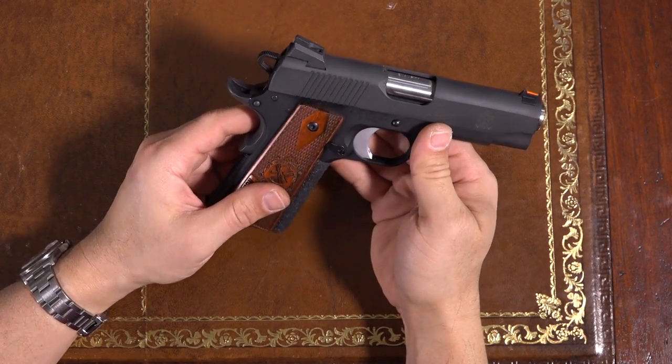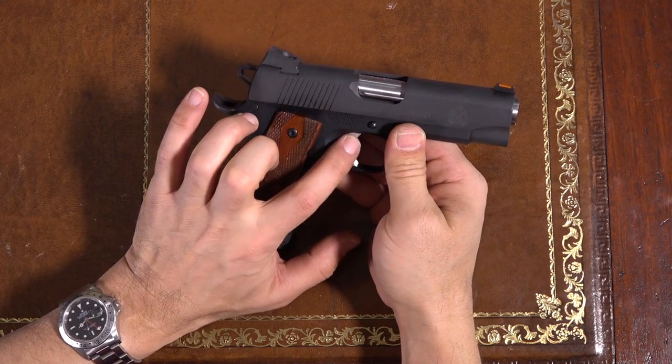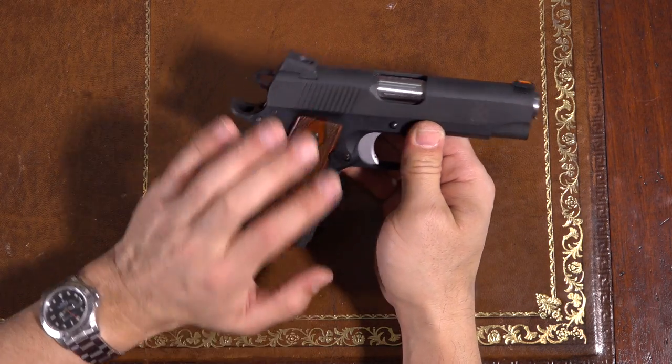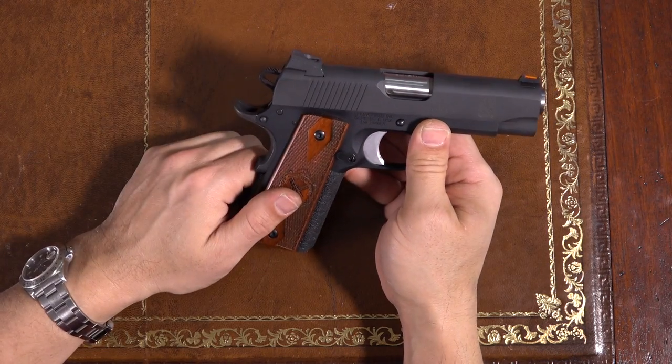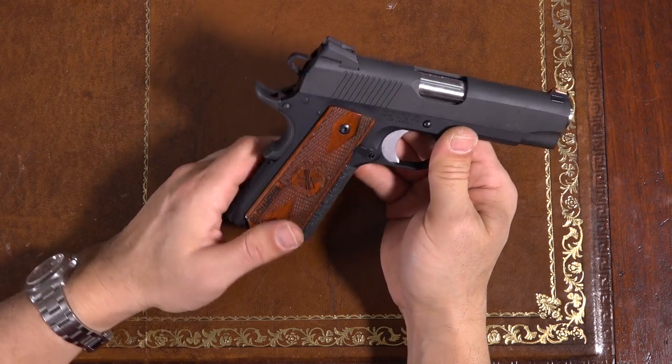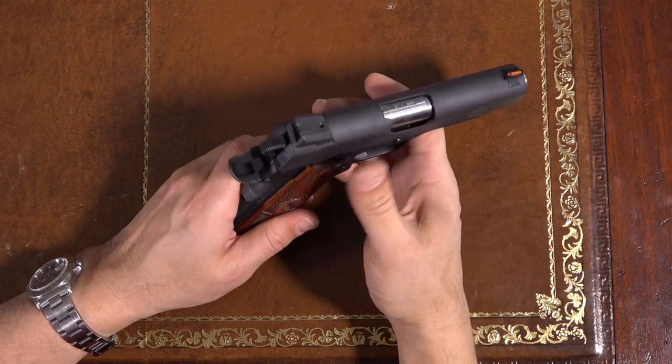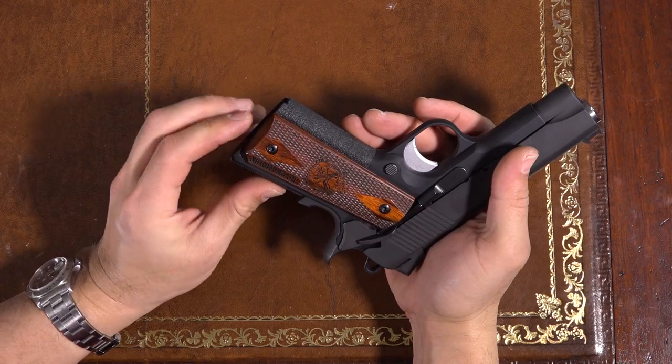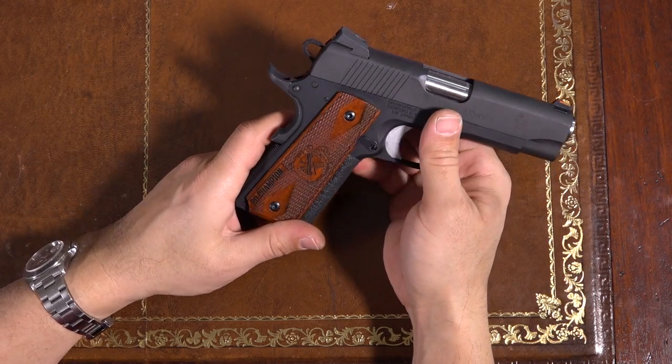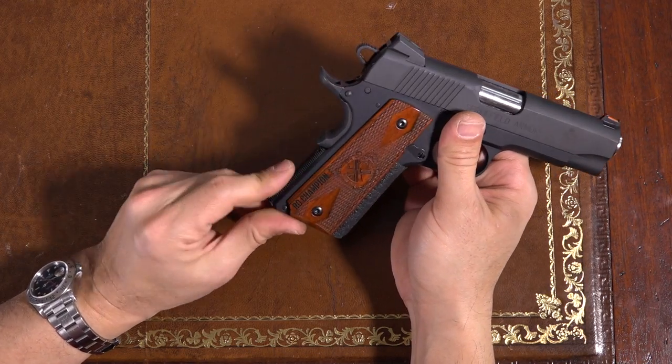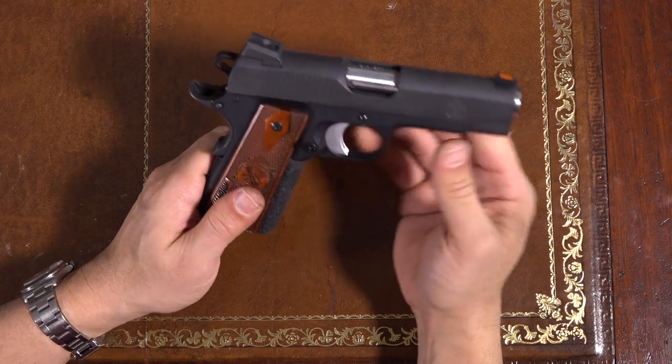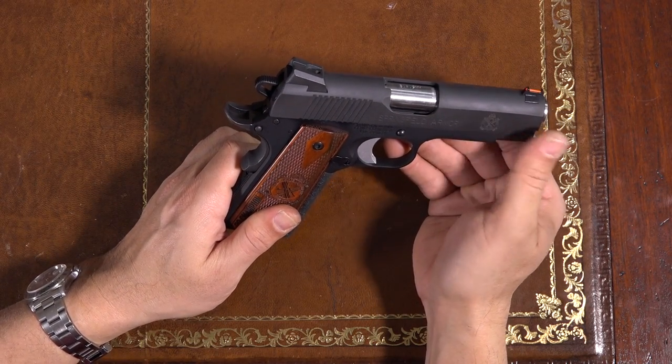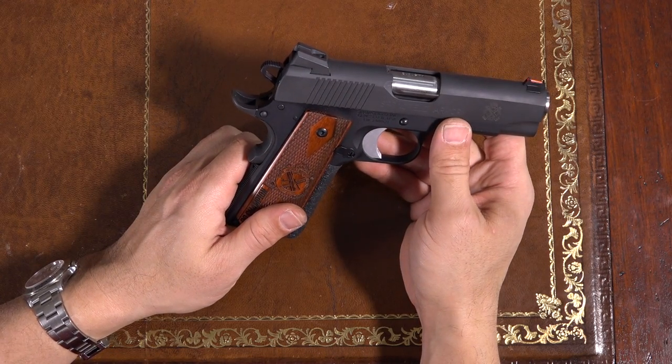So since I've gotten back from the range, like I said, I replaced this trigger to get rid of that last little bit of grit. And I did a little bit more work on the hammer and sear to get it down to four pounds, one ounce, which is pretty much exactly where I like it. If you're not comfortable working on 1911 triggers and sears and hammers, I wouldn't recommend doing it yourself. I do have all the proper jigs and stoning tools and stuff like that. So I do it myself, but otherwise I would suggest sending it to a qualified Smith.